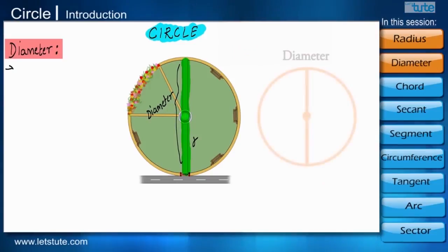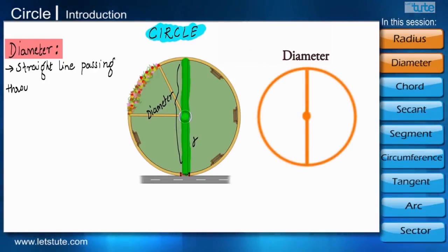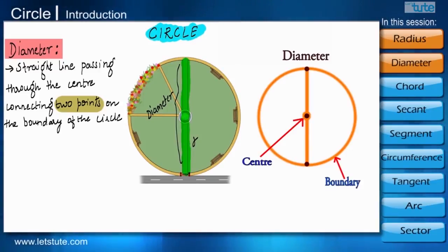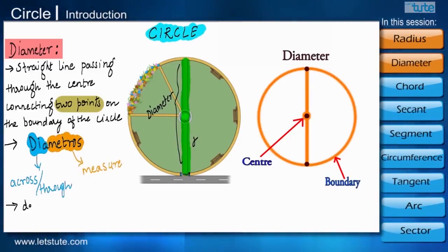The diameter of the circle is a straight line passing through the center connecting two points on the boundary of the circle. Diameter comes from a Greek word dimeteros where di means across or through and metrons means to measure. Diameter is denoted by the small letter d.